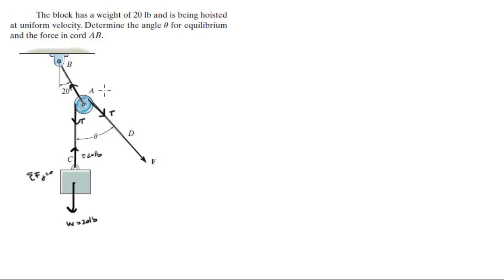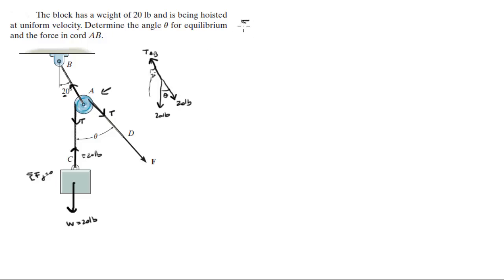So you also have this tension right here. The free body diagram has tension AB, 20 pounds, 20 pounds, angle theta, and 20 degrees. The sum of the forces in the X is equal to zero: negative tension AB times sine of 20 plus 20 sine of theta is equal to zero.